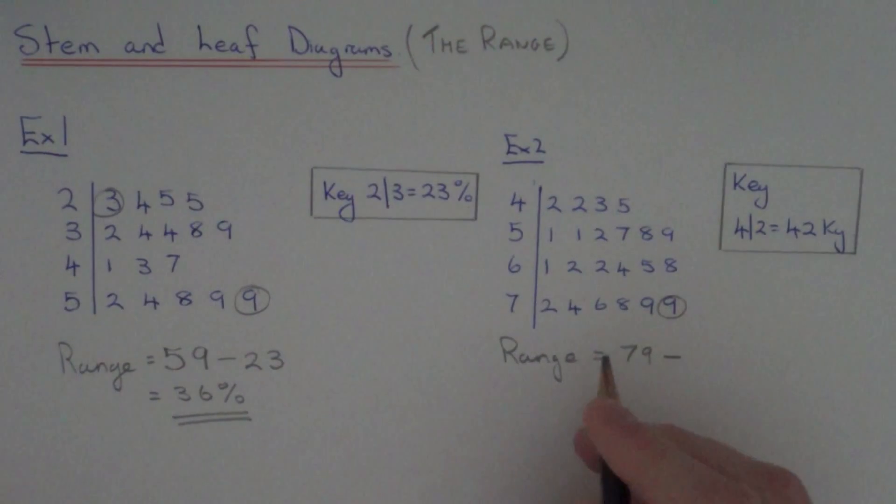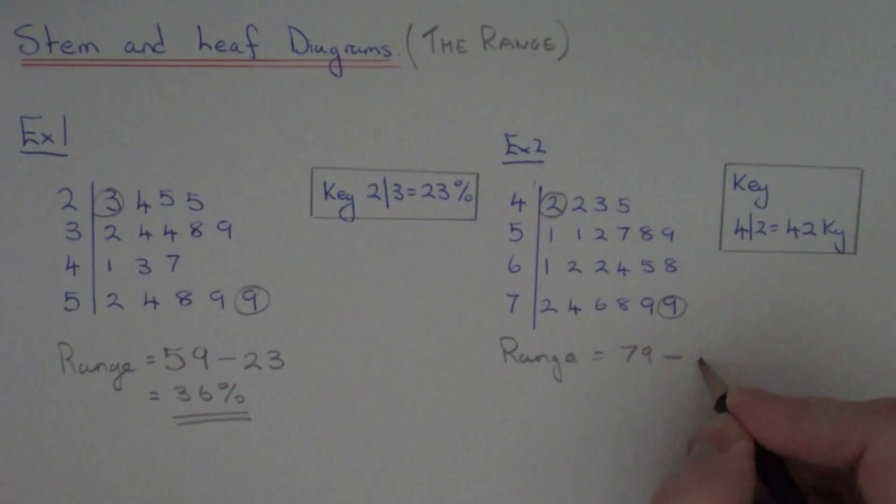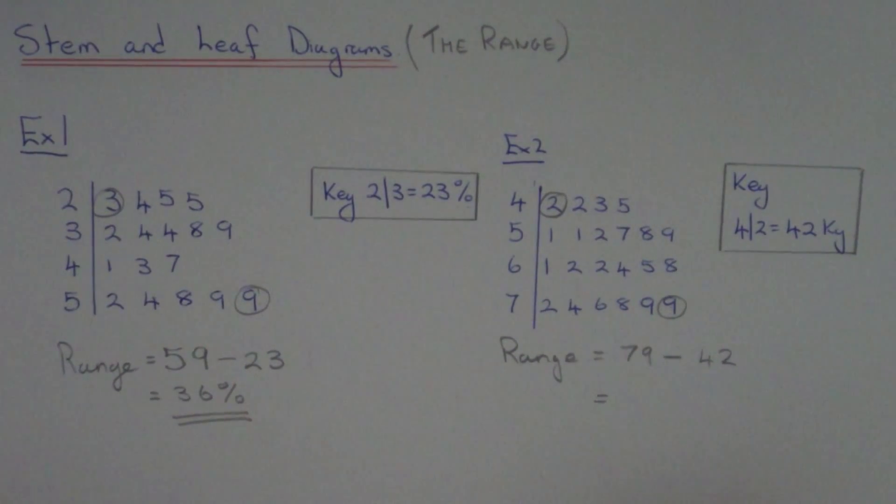And our smallest measurement was 42. So 79 take away 42 gives us an answer of 37 kilograms.